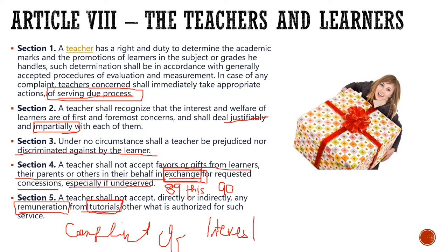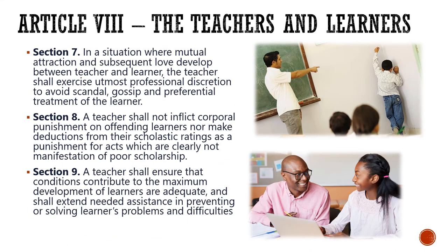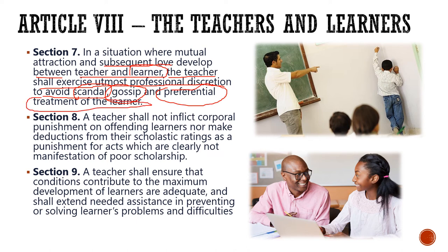There are exceptions to the tutorial prohibition: if the students are not under you or are from another school, it is allowed. In a situation where mutual attraction and subsequent love develop between a teacher and a student, the teacher shall exercise utmost professional discretion to avoid scandal, gossip, and preferential treatment of the learner. Section 8: a teacher shall not inflict corporal punishment. This is still debatable on what constitutes corporal punishment, but it is best not to inflict any punishment, whether corporal or not.